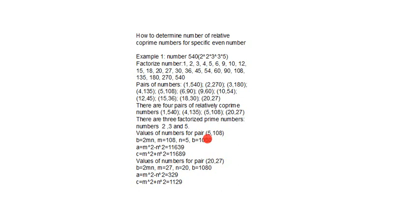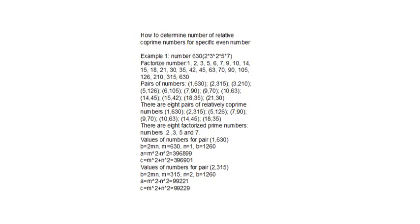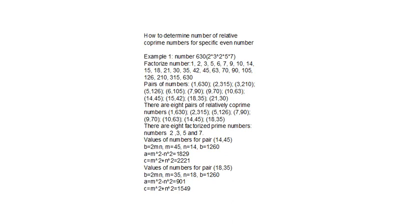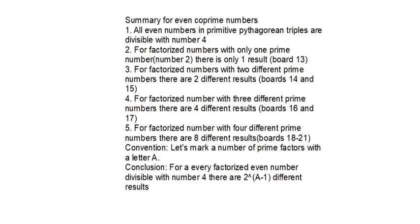...third pair, third pair, and fourth pair. And the last pair: for factorized numbers with three different prime numbers, there are four different results.